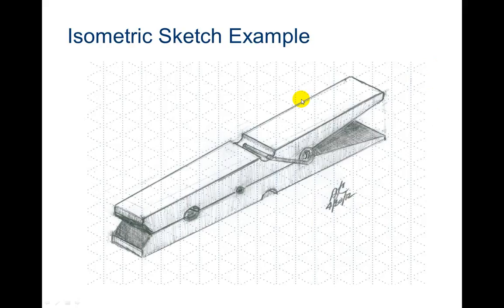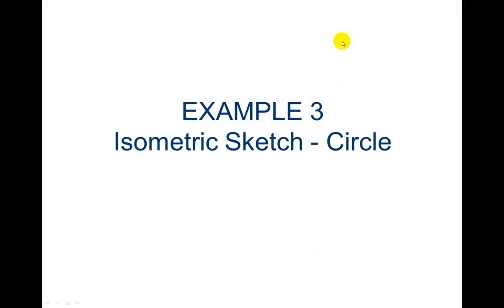Here's an example of an isometric sketch. Notice they've got some tonal shading in here. Now we have example three.